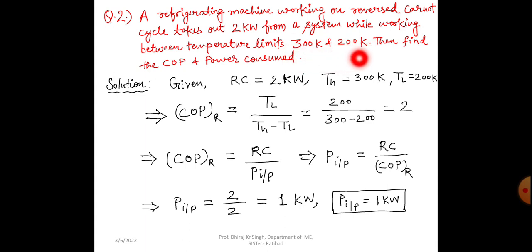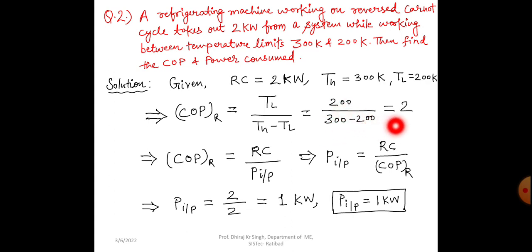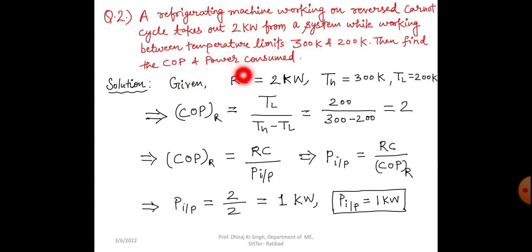Since it is a reversed Carnot cycle, we know the formula: coefficient of performance of refrigerator is equal to T_L divided by (T_H minus T_L), where T_L is the lower temperature and T_H is the higher temperature. With T_L equal to 200 and T_H equal to 300, after solving we get the coefficient of performance of refrigerator as 2.